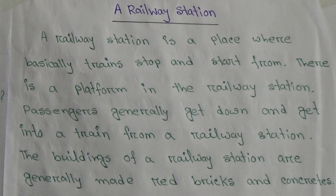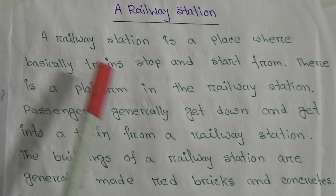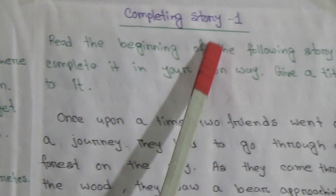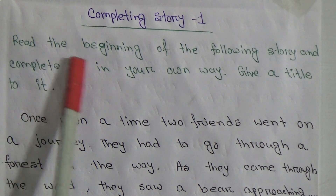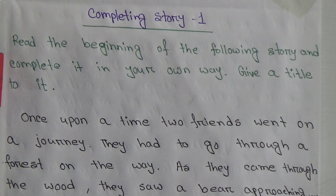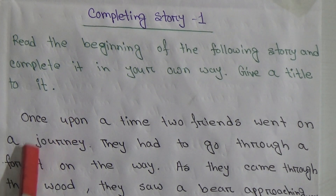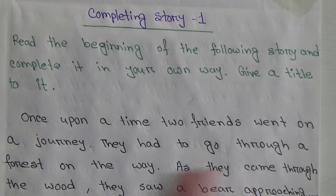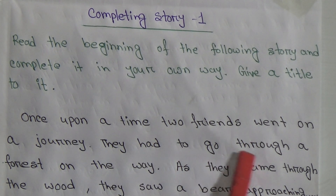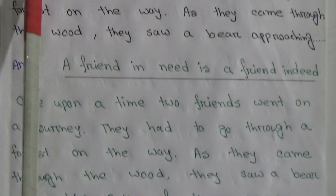So my students, this is our paragraph about Railway Station. You have to write answers related to those questions in this paragraph. Now our second topic is Completing Story Number 1. Read the beginning of the following story and complete it in your own way. Give a title to it. There is an incomplete story. Once upon a time, two friends went on a journey. They had to go through a forest on the way. As they came through the wood, they saw a bear approaching.